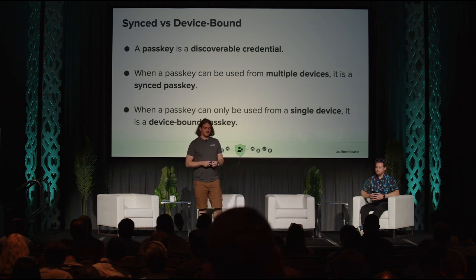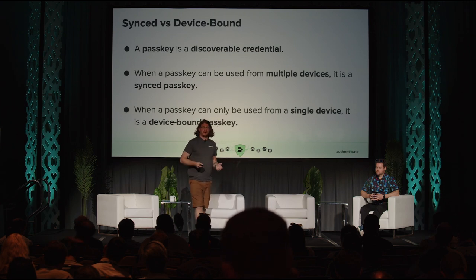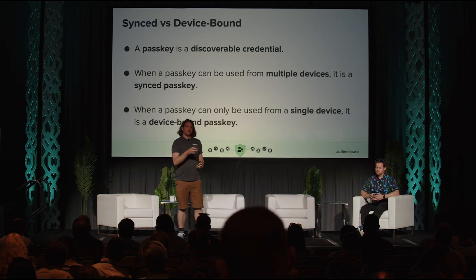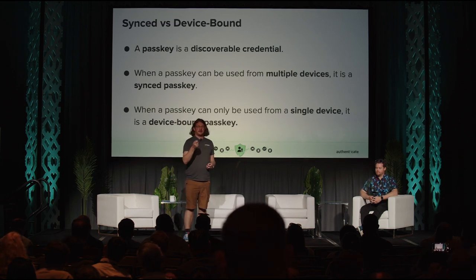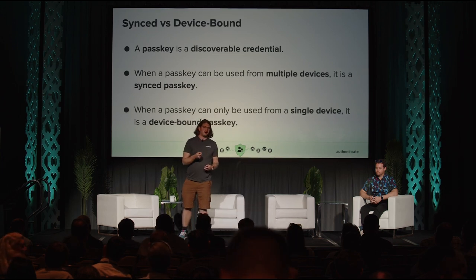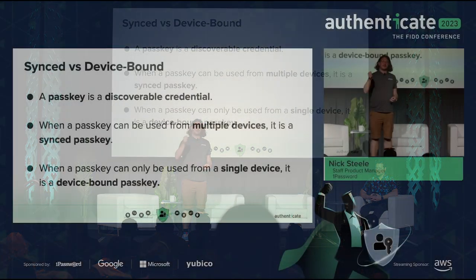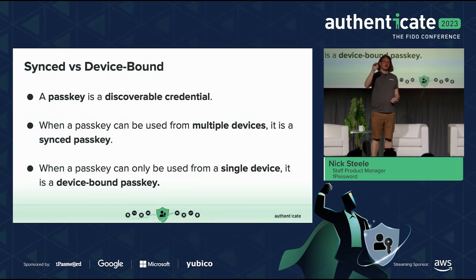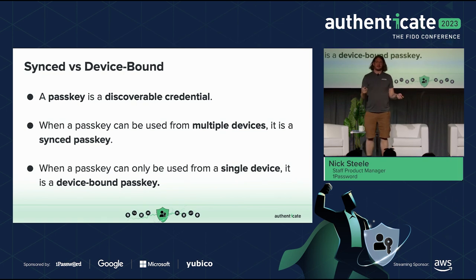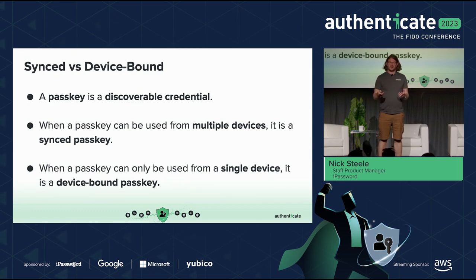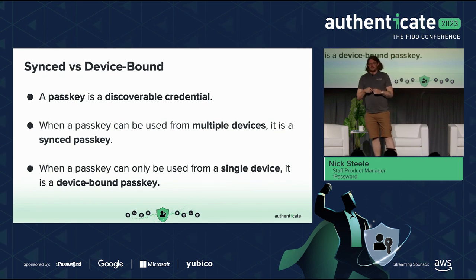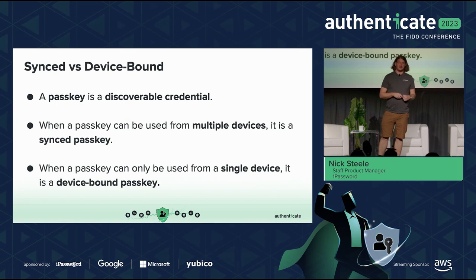As mentioned, a passkey is a discoverable credential. A discoverable credential, in a nutshell, is a credential that can be tied back to an authenticator by a client. When I go to log in with my 1Password account and I have a passkey stored in it, I'll get some sort of notification — probably a pop-up or modal attached to an input field — that says 'we see a passkey associated with this, do you want to use it?' When a passkey can be used across multiple devices and still be discoverable, that's when we have a synced passkey. When a passkey can only be used from a single device, we have a device-bound passkey.